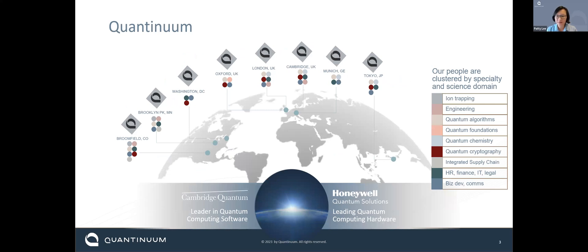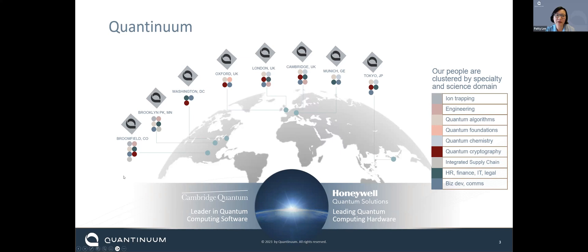Many of you might not have heard about Quantinuum, or maybe you're wondering how to say its name — it's like 'Continuum' but with 'quantum' in front, so it's Quantinuum. Quantinuum was formed at the end of 2021. It's a merger between Honeywell Quantum Solutions, which has been building trapped ion quantum computing hardware, and Cambridge Quantum Computing, a software company in the UK. Right now we still have most of our hardware in Colorado and Minnesota, and our colleagues internationally do most of the software development work in the UK, Germany, and Japan.